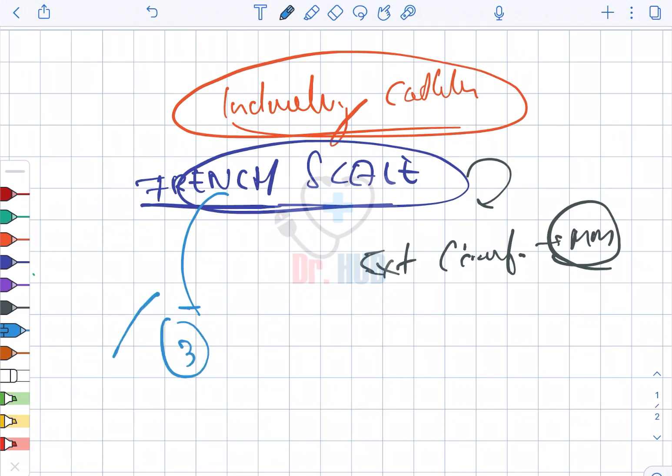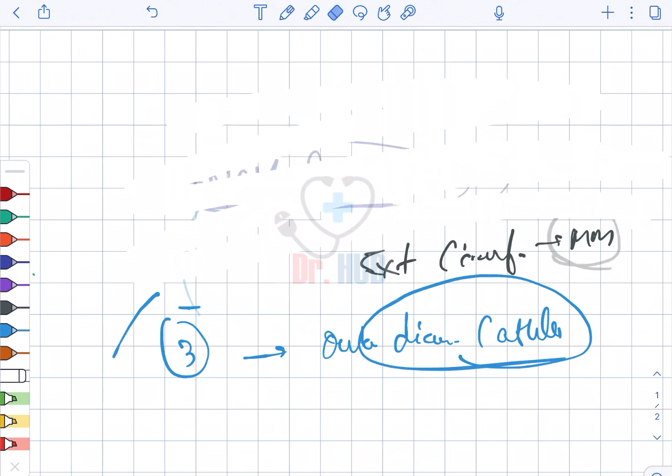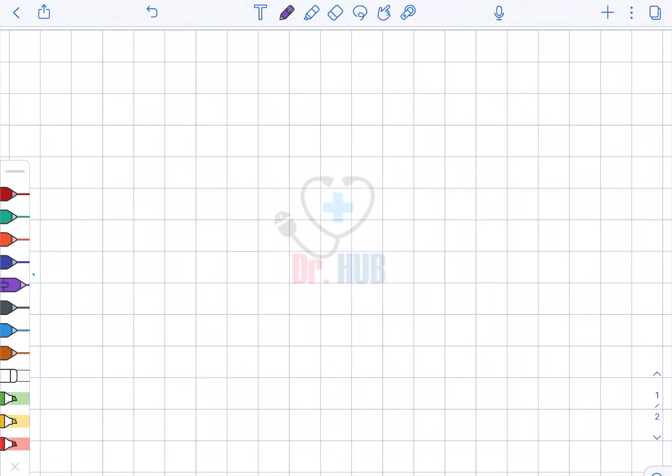The French size, if you see, is divided by 3, and it will give the outer diameter of the catheter. So if you look at the Fr, the Fr size is equal to 3 times the D. D is nothing but the outer diameter, and this is in millimeters.